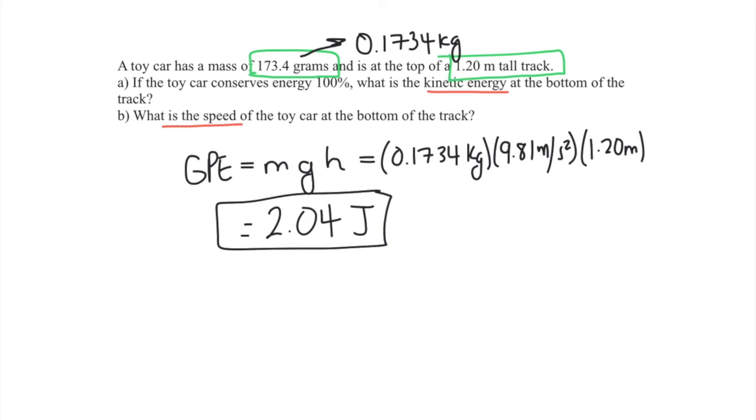That's our answer to part a. For part b we're going to find the speed of the car at the bottom of the track. Remember in part a, the GPE is also the KE, the kinetic energy.